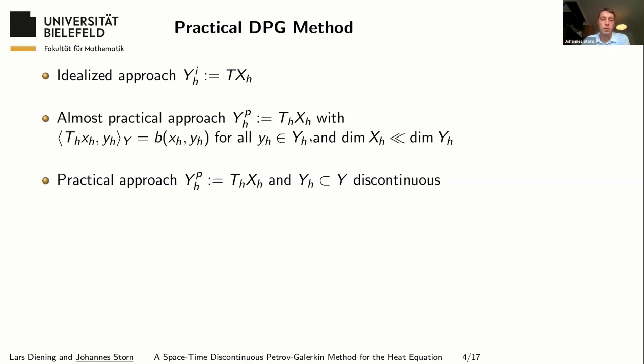To remedy this downside, we assume in addition that the space Y is discontinuous across the interfaces of the underlying triangulation, which leads to a block diagonal Gram matrix which thus can be inverted locally, very easily. If we are able to invert the Gram matrix, we can reduce this large saddle point problem to a symmetric positive definite problem of size dimension of X_h. So under this assumption, we have a very nice numerical scheme which is very stable and can be computed efficiently.